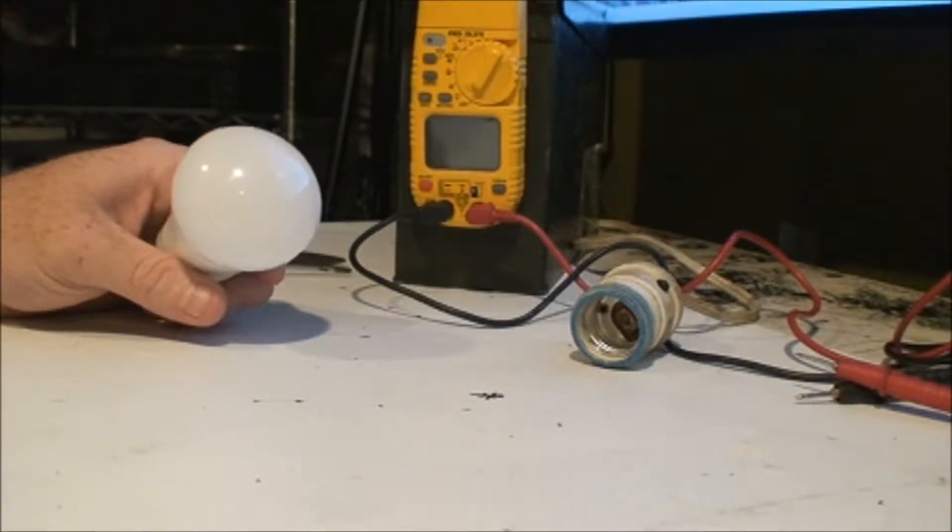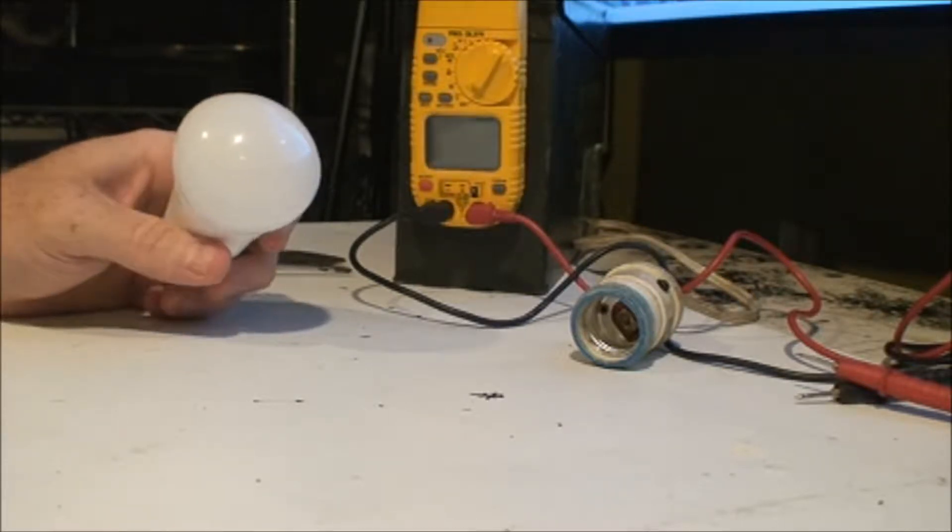Hello, today we're going to be disassembling an EcoSmart 9 watt 5000 Kelvin LED bulb.